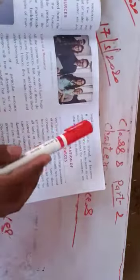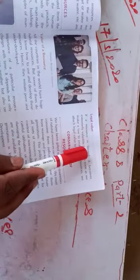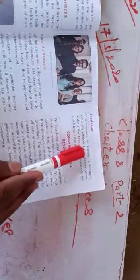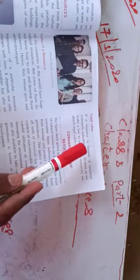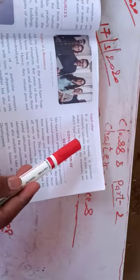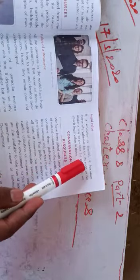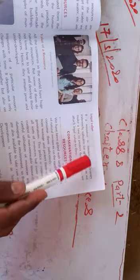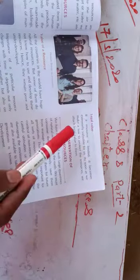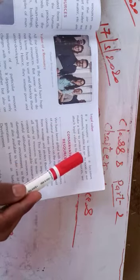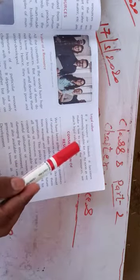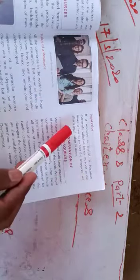Now, legal value. If a resource is limited, it becomes extremely valuable for us. As soon as we make a law to protect a resource, we attach legal value to it. When a resource becomes scarce and laws are enacted to protect it, that resource acquires legal value. Right?